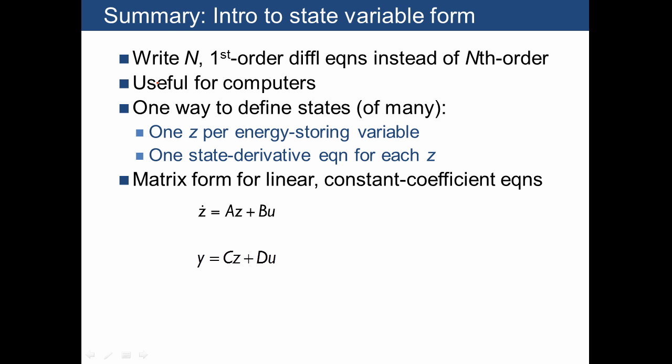Let's just summarize what we've talked about so far. We said that instead of writing our input-output form, which is a nth-order differential equation, we're going to write our state variable form in terms of n first-order differential equations because those are very useful to work with for computers. And we talked about one way to define states, and I should say that this is not the only way. This is just one convenient way, is to use z for our state variables and to define one z per energy storing variable in our system. And then we need to write one state derivative equation for each z.